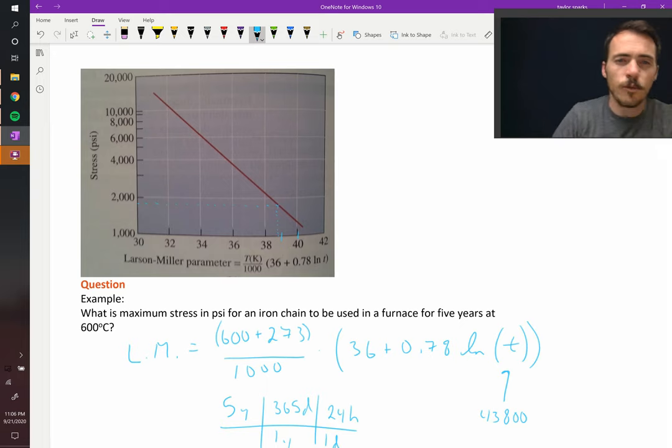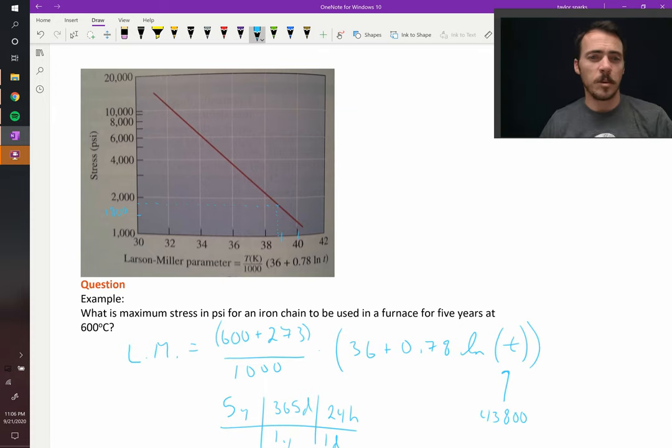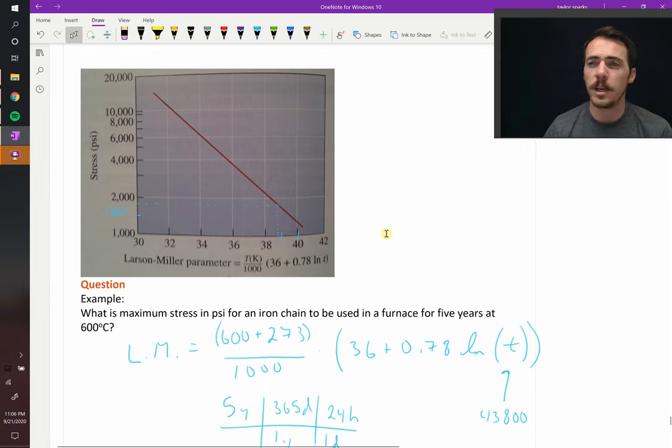We see that if we want that material to survive five years at 600 Celsius, we better not load it more than—if that's maybe 1,500, that's 1,750—maybe 1,800 PSI. PSI units, because these people are barbarians instead of using metric. Something like 1,800 PSI would be what you would require for this material.